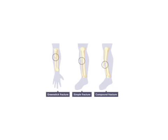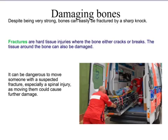Bones are very strong, but if you knock them they can fracture — fracture just means break. There are different types of fracture: the greenstick fracture, the simple fracture, and the compound fracture. They can be fractured by sharp knocks — fractures are hard tissue injuries. The bone can either crack or it can break. It can be dangerous to move a fracture, so you should keep it as it is.